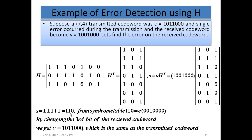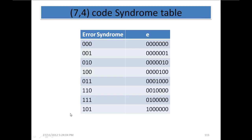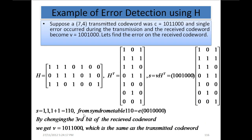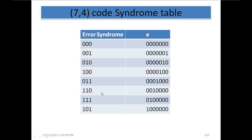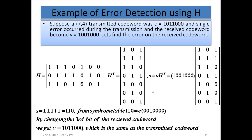From the syndrome table, the syndrome 110 corresponds to the error pattern 0010000, meaning the error is at the third bit location. Correcting this bit gives the codeword 1011000, which matches the original transmitted codeword. The error has been detected and corrected, and we receive the corrected codeword.